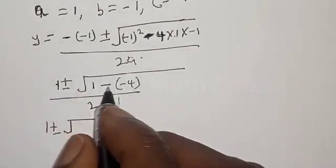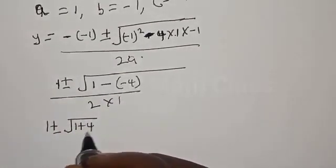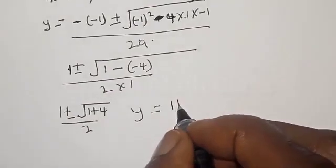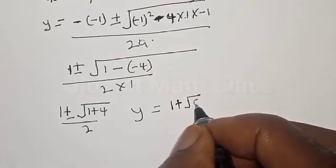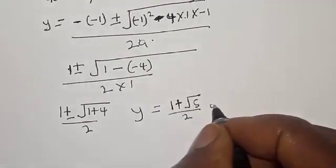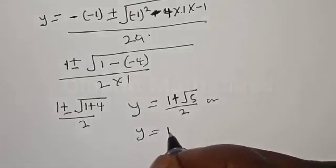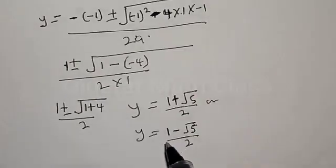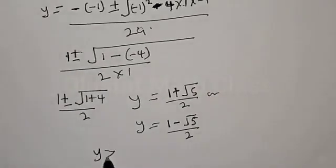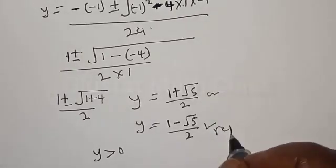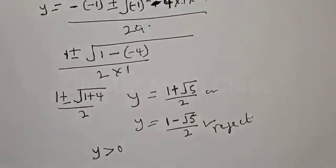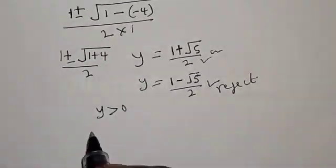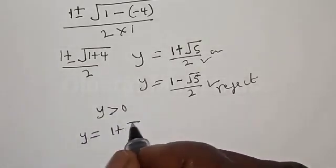Then we have 1 plus or minus square root of 1 minus minus 4, over 2 times 1. That is 1 minus minus 4, so 1 plus 4, over 2. Therefore y is equal to 1 plus or minus square root of 5, over 2. But since y must be greater than 0, we reject the negative root.